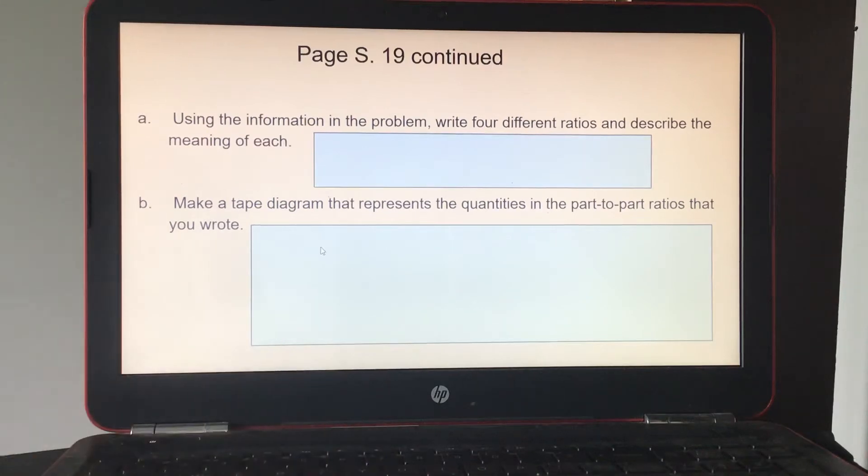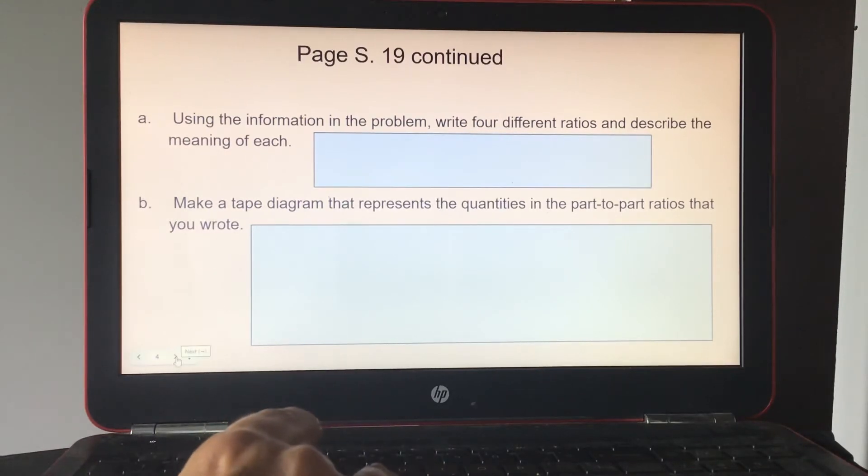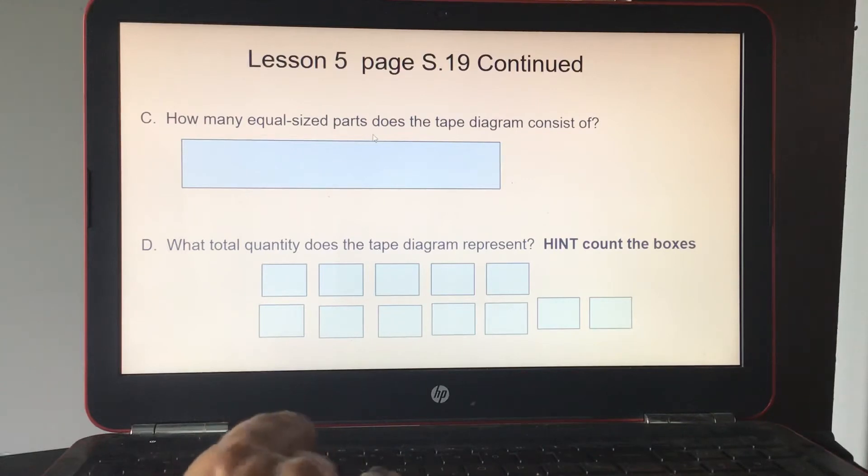You're going to make a tape diagram that represents the quantities in the part-to-part ratios that you wrote. So you're going to have 5 to 7. So 5 boxes for the cars, 7 for the trucks. Everybody should have a book at home, so make sure you make the tape diagram. How many equal-sized parts does the tape diagram consist of? So if you count 5 plus 7, you would have your answer here. And what total quantity does the tape diagram represent? Hint, count the boxes.